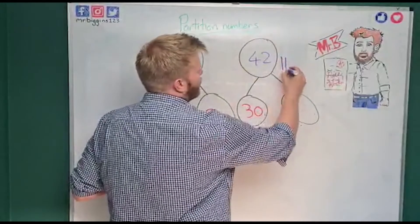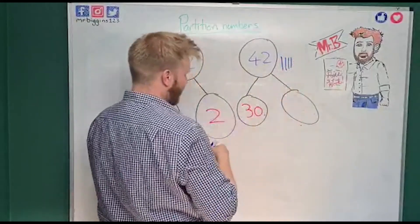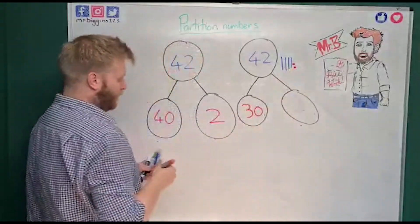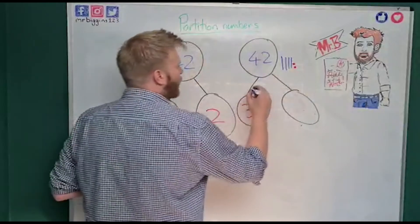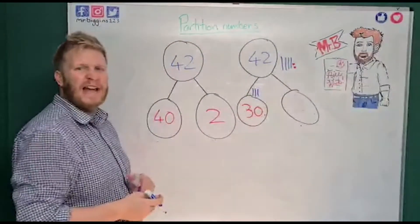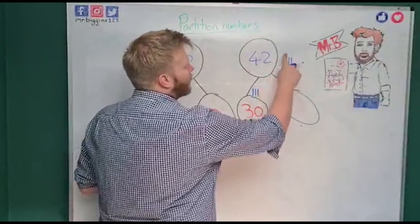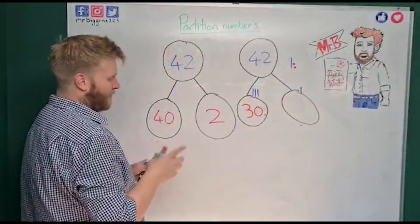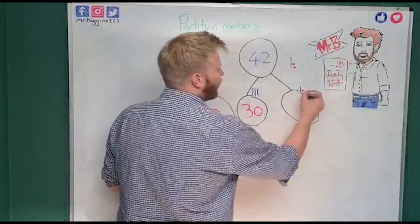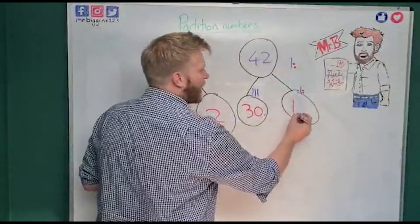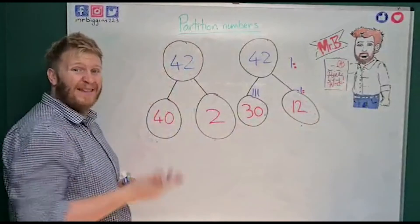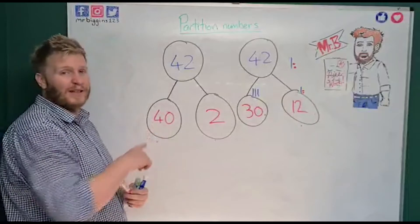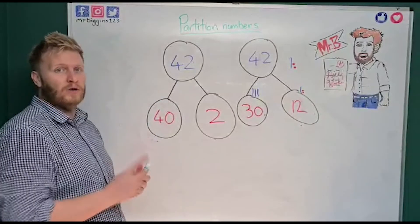I'm going to go back to using base ten blocks, drawing them as lines — one, two, three, four tens and my two ones. If I put 30 in one part, that accounts for one, two, three tens. So wiping away three tens, what am I left with? One ten and two ones — and one ten and two ones is 12. So 42 can be partitioned into 30 and 12, and you can check: 30 plus 12 equals 42.